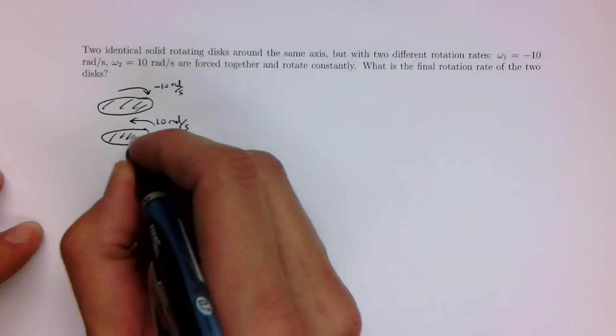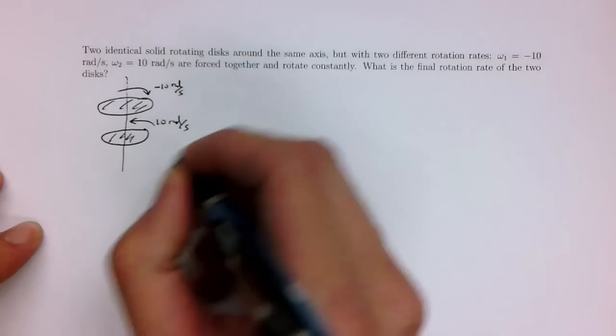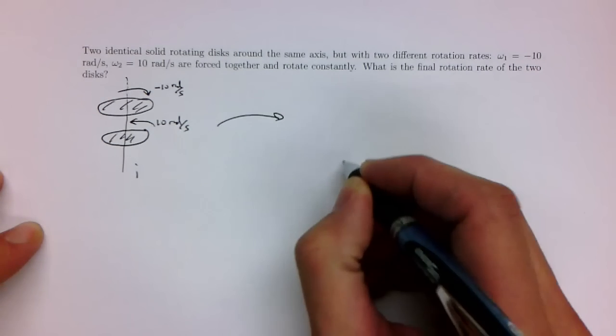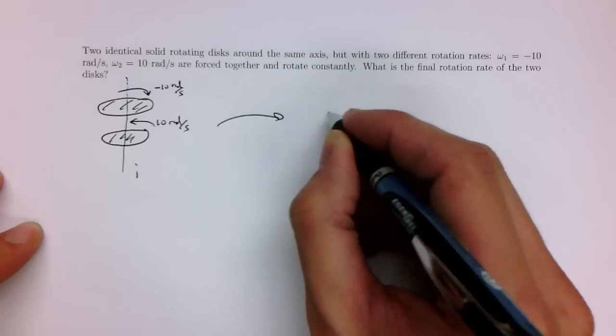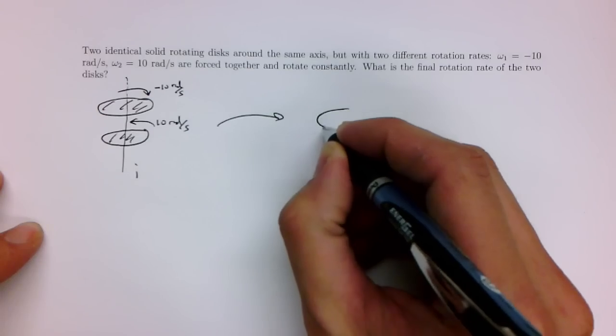and it's also solid. And they rotate around this common axis, alright? And this is the initial situation, and the final situation is that you have these two discs. Let's draw this carefully.